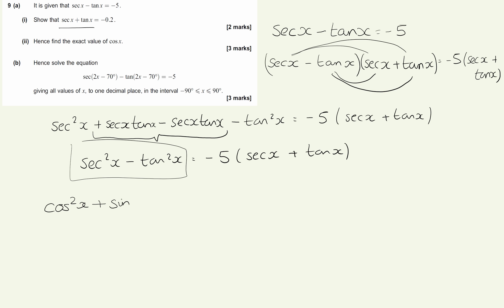So remember the first identity that you would have learnt for core 2: cos squared plus sine squared equals 1. Now we want the identity involving tan squared, so we want the sine divided by cos squared. And if we divide the entire identity here by cos squared, we will have derived the identity we need. So cos squared over cos squared is 1, sine squared over cos squared is tan squared, and 1 over cos squared is the same as sec squared.